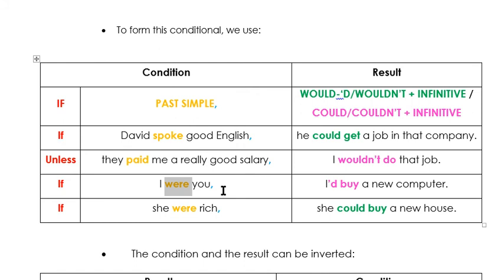Para todos los sujetos: I, you, he, she, it, we, you and they. Look at the following example: if she were rich, she could buy a new house. Si ella fuese rica, podría comprarse una casa nueva.